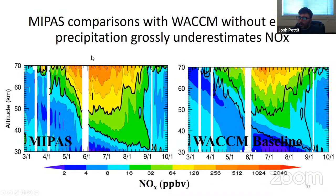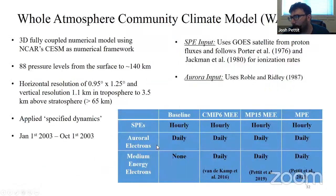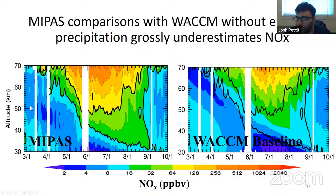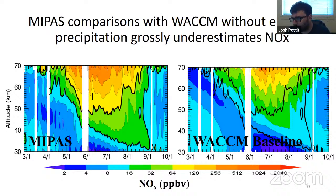I wanted to highlight this plot because it's important to note why we need to do this. On the left are NOx mixing ratios from MIPAS — observations, a limb-sounding instrument that measures globally, from 60 to 90 south. This is what actually is happening. On the right is what WACCM would output without any energetic electron precipitation. It should be clear that it grossly underestimates the amount of NOx reaching the stratosphere. That's why we're doing this — we want to get the chemistry right because we know the chemistry impacts the ozone, which impacts the temperature and the winds.